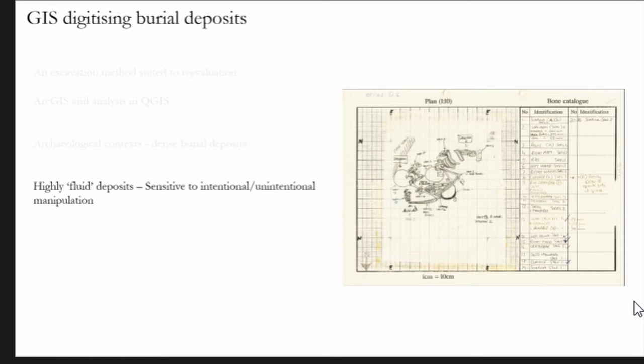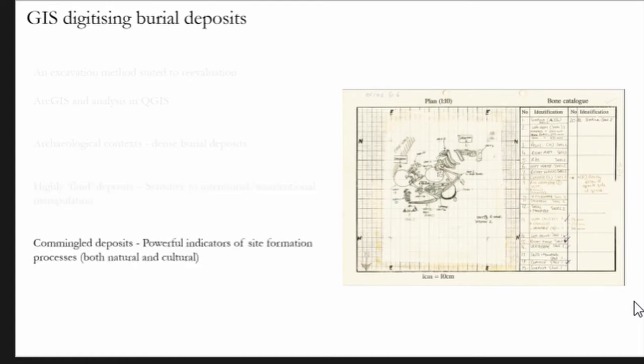Co-mingled human remains are so sensitive to intentional and unintentional manipulation. If you think about your average archaeological deposit, you have a matrix and a few bits of pottery and that doesn't actually really tell us a lot. If we think about the deposits that we have on this site, you have your archaeological matrix that is full of tiny little fragments of bone, each one sensitive to being moved either intentionally or unintentionally. Using that, co-mingled deposits actually become a really powerful indicator of site formation processes.